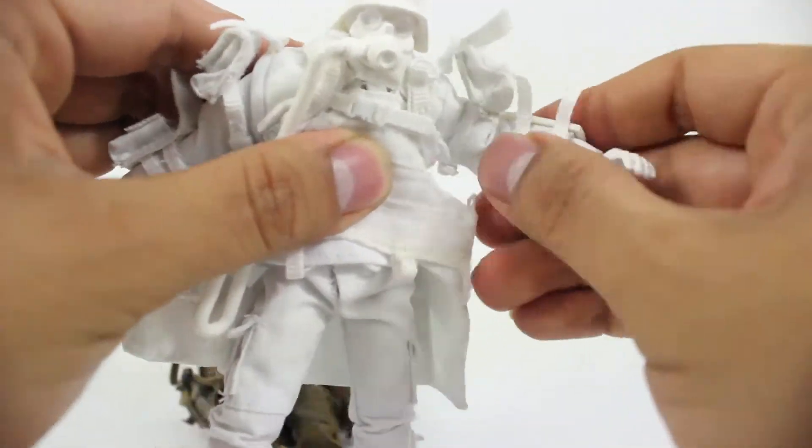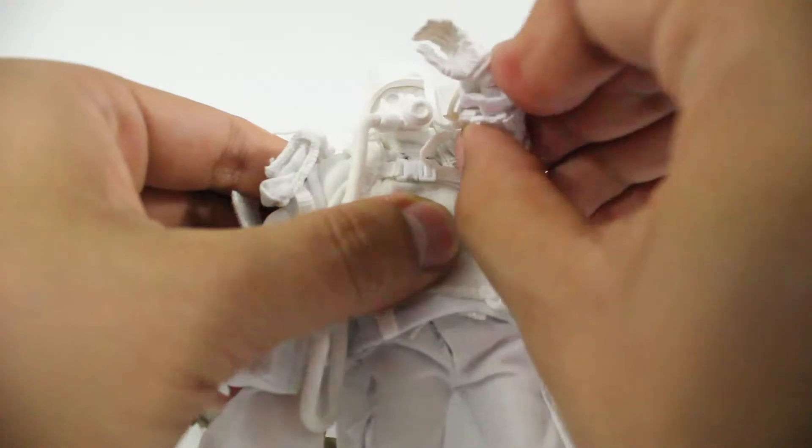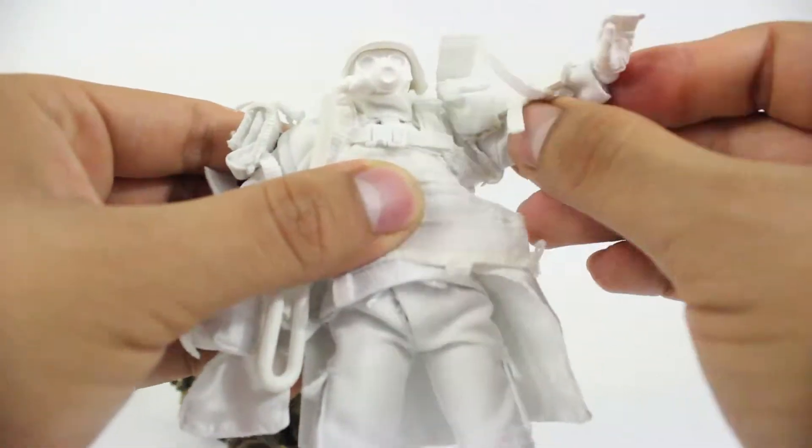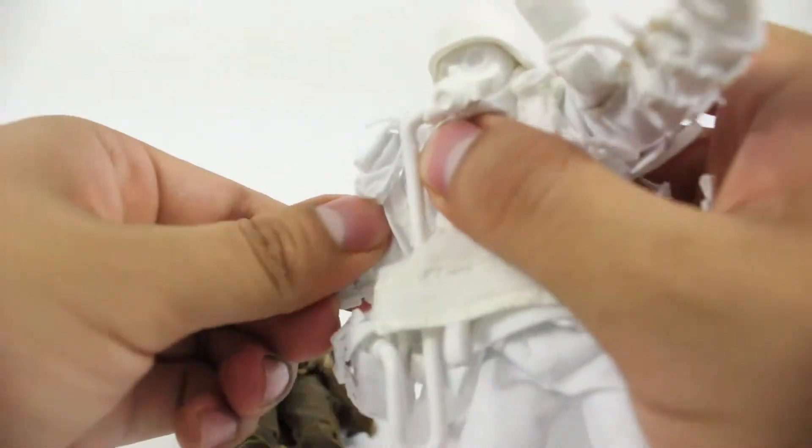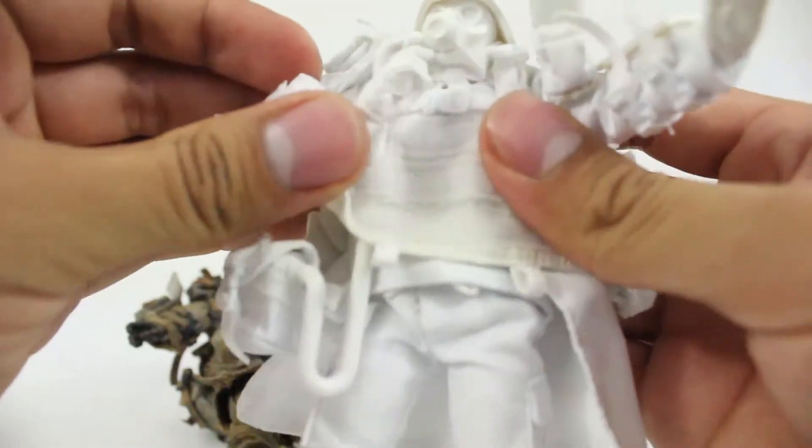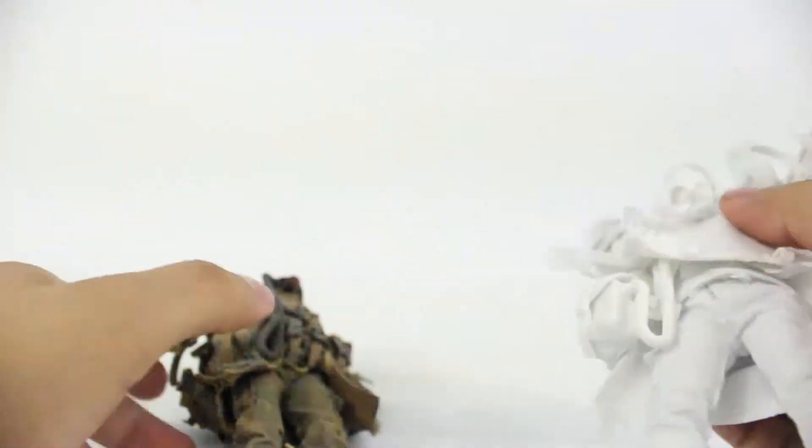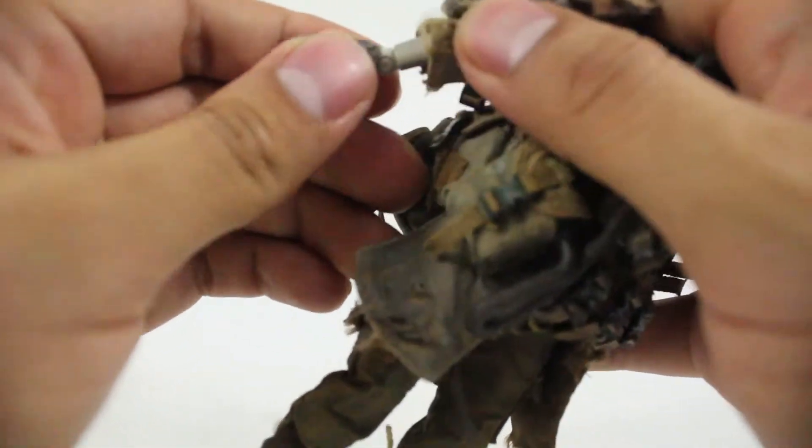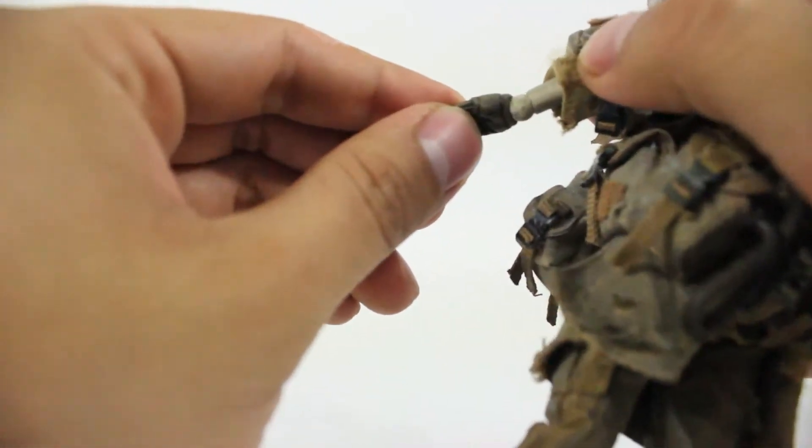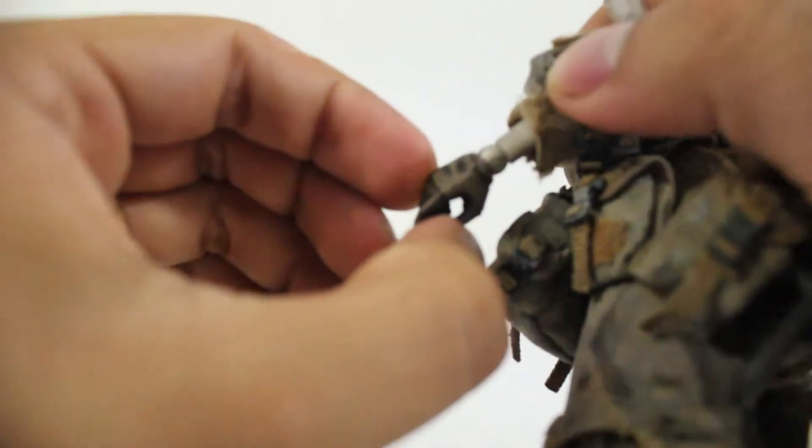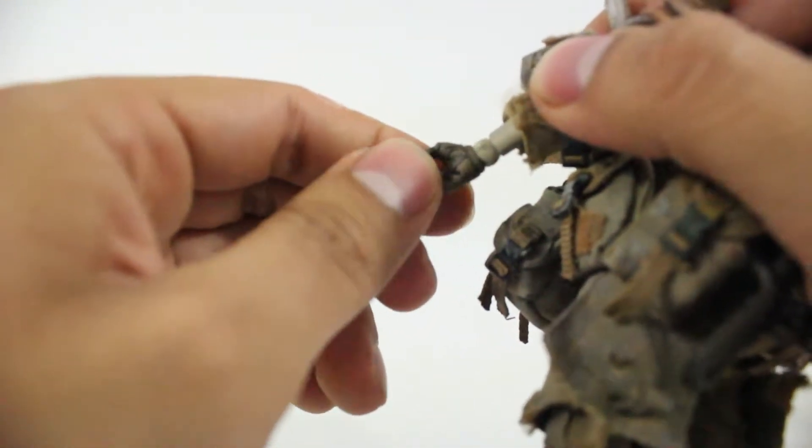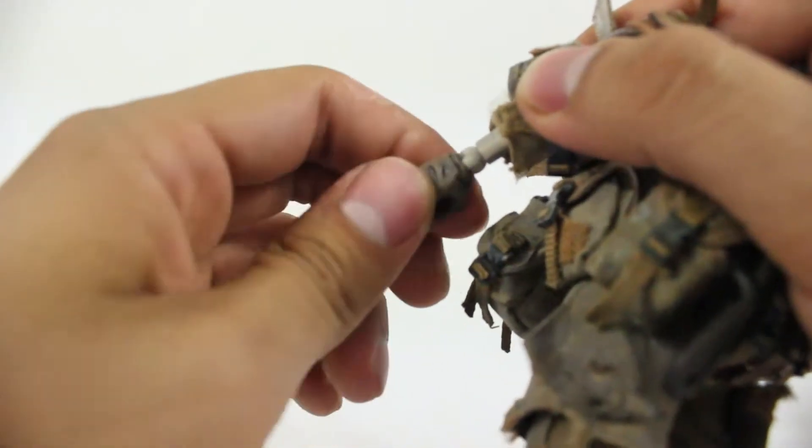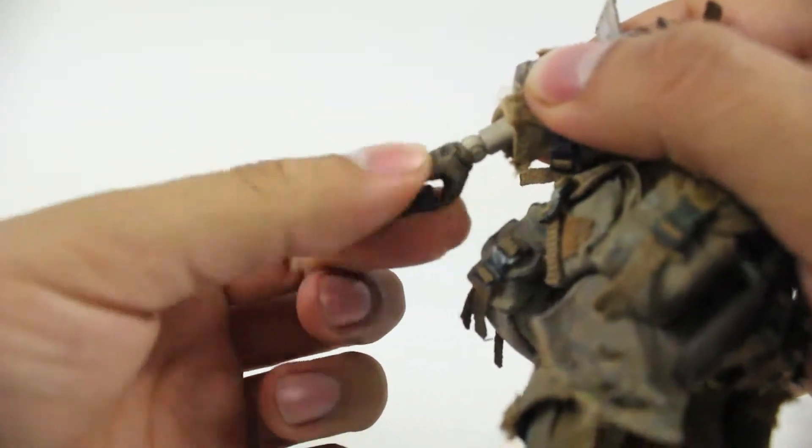At the elbow it's actually double jointed so you can bring it in real close. I think his elbow is actually facing the wrong way on this arm. So like I said, you can bring his arm really close to his mouth. The arms aren't necessarily on a ball joint but more or less it does this 360 swivel motion and it pivots up and down.